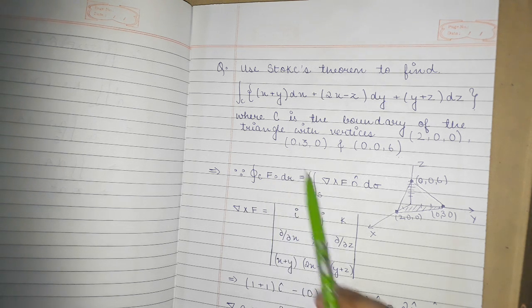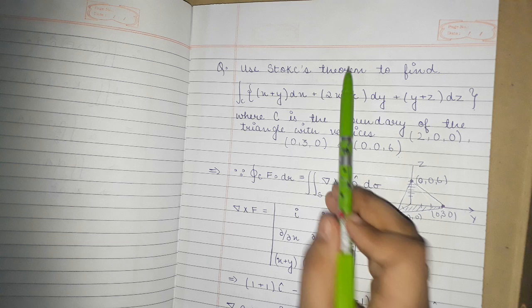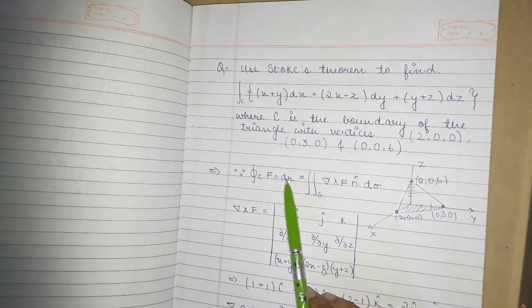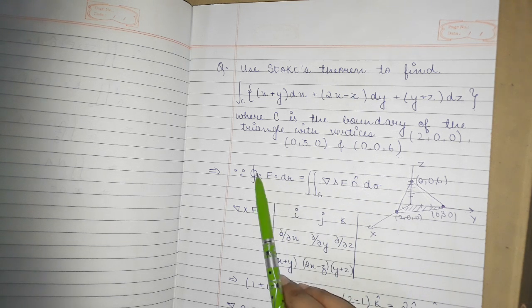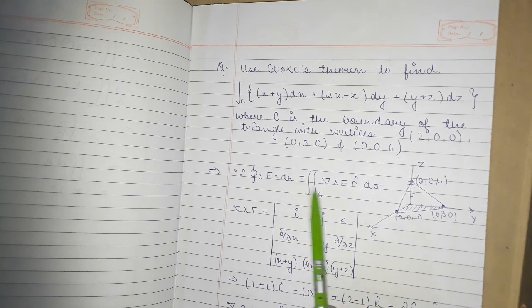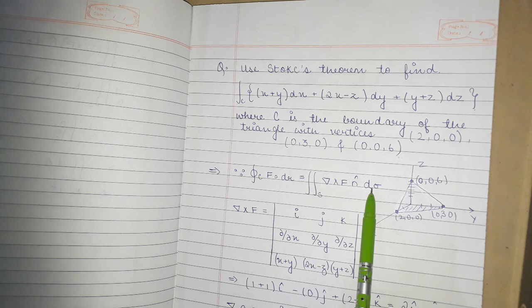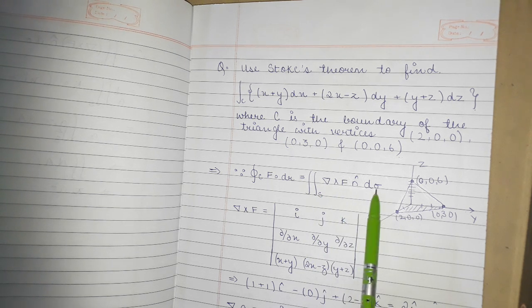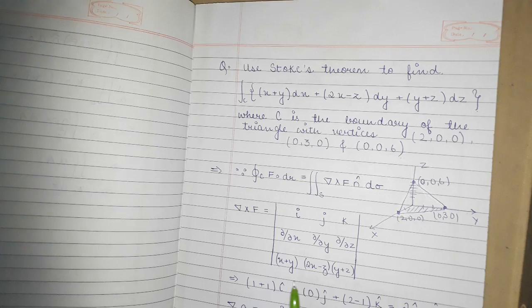By Stokes theorem, we know that the line integral of F·dr over any closed curve C is equal to the surface integral of curl F · n dσ. So now we have to obtain the values of curl F and n cap.